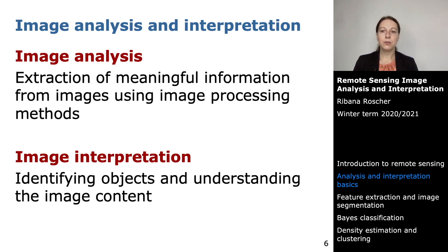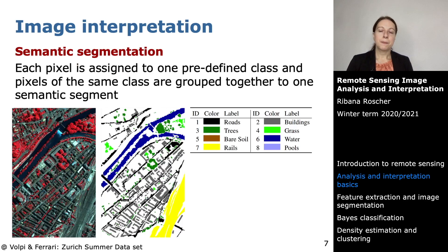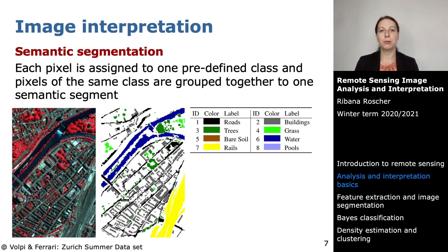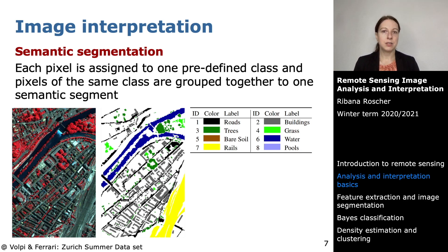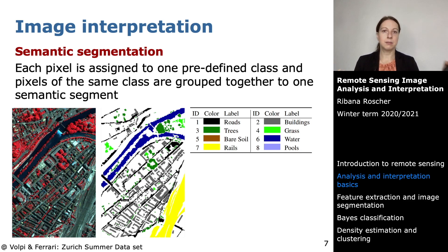For the rest of today's lecture I want to focus on image interpretation. There are different possibilities for what can be interpreted. One is semantic segmentation — here's a more complex example. When you do semantic segmentation you assign each pixel to one predefined class, and pixels of the same class are grouped into one semantic segment, where each pixel shares the same semantic meaning.